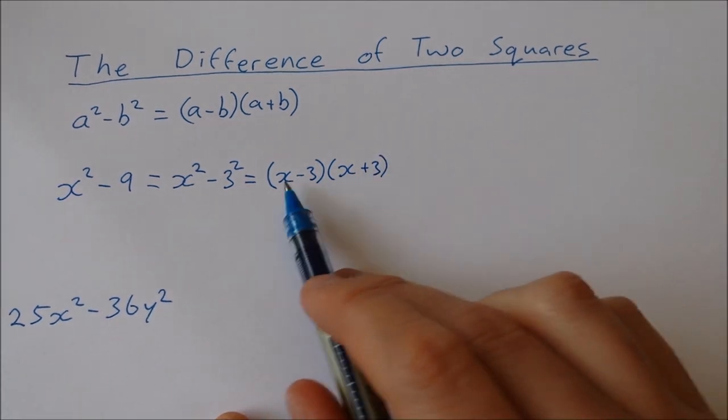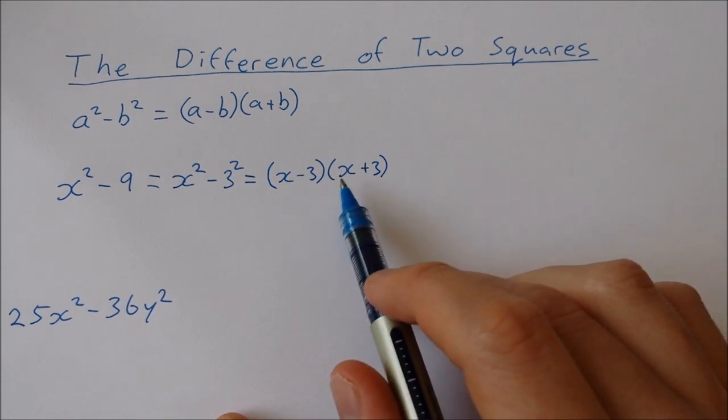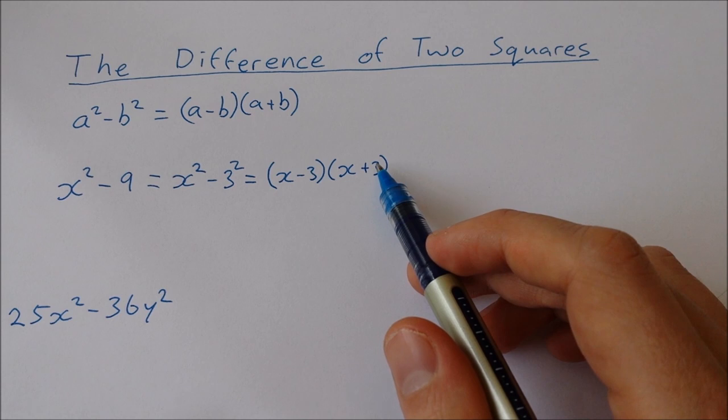Now the order of these brackets, it doesn't actually matter. If we had x plus 3 times x minus 3, it wouldn't make a difference.